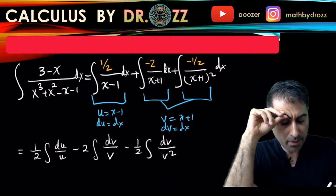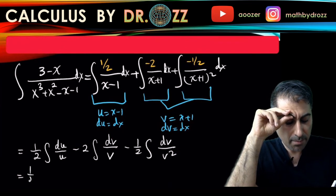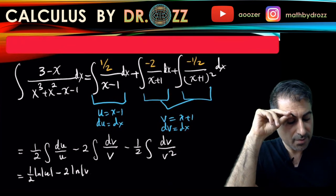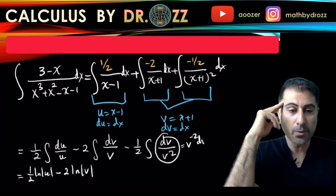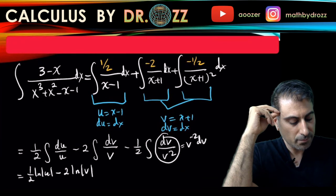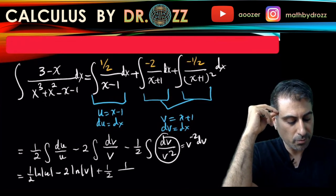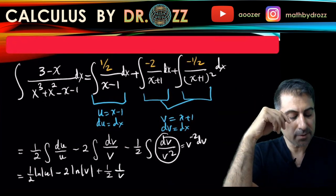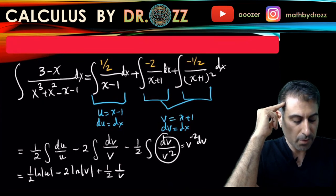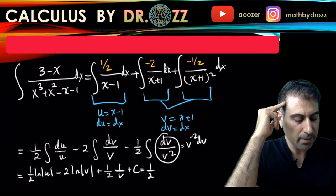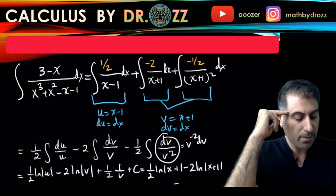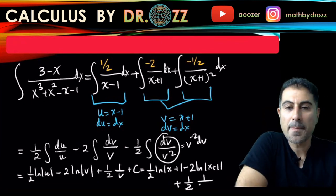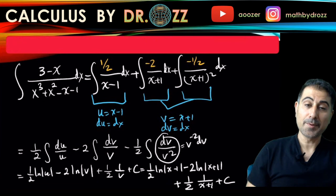Integrating in one shot: one half times ln|u| minus 2 times ln|v|, and for the v squared term I use the power rule — v to the minus two integrates to v to the minus one over minus one, giving one over v. So the final answer is one half ln|x minus one| minus 2 ln|x plus one| plus one half times one over (x plus one) plus C.